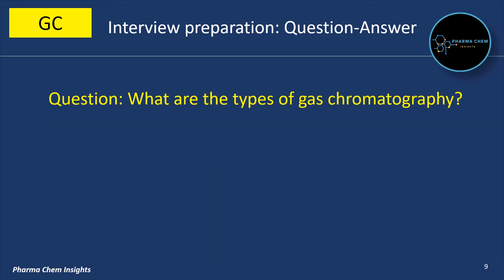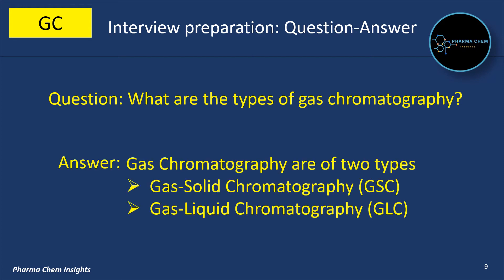Next question: What are the types of gas chromatography? There are two types: first is gas solid chromatography (GSC), and second is gas liquid chromatography (GLC). In gas solid chromatography, the stationary phase is solid, and in gas liquid chromatography, the stationary phase is liquid.